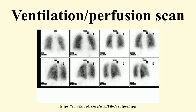Ventilation imaging can also be performed using a technogas machine, which produces technetium-labeled carbon nanoparticles called technogas. The perfusion phase of the test involves the intravenous injection of radioactive technetium macro-aggregated albumin. A gamma camera acquires the images for both phases of the study. A SPECT image can also be taken following an injection of technetium-labeled MAA.